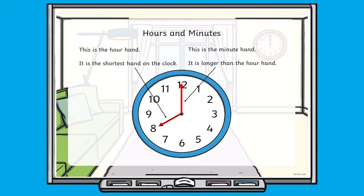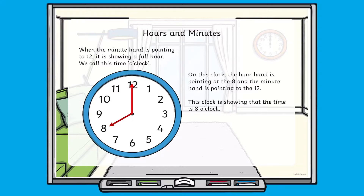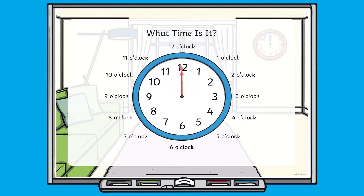This PowerPoint starts by looking at hours and minutes, and which hand is for which. It then goes on to look at the time by looking at the different o'clocks.